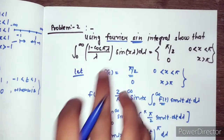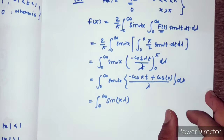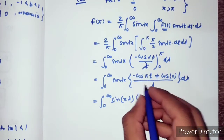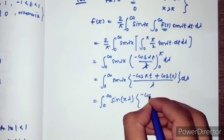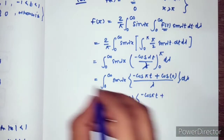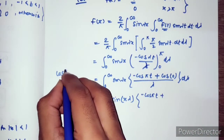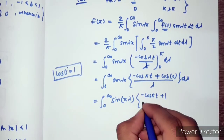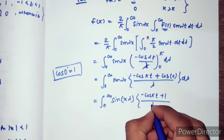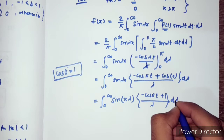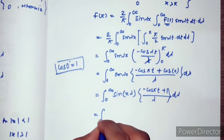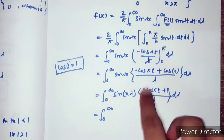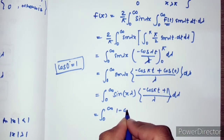Evaluating: minus cos(λπ) and then cos(0), which equals 1, so we have plus 1 upon λ, times dλ. Continuing the solution: from 0 to infinity we get 1 minus cos(λπ).